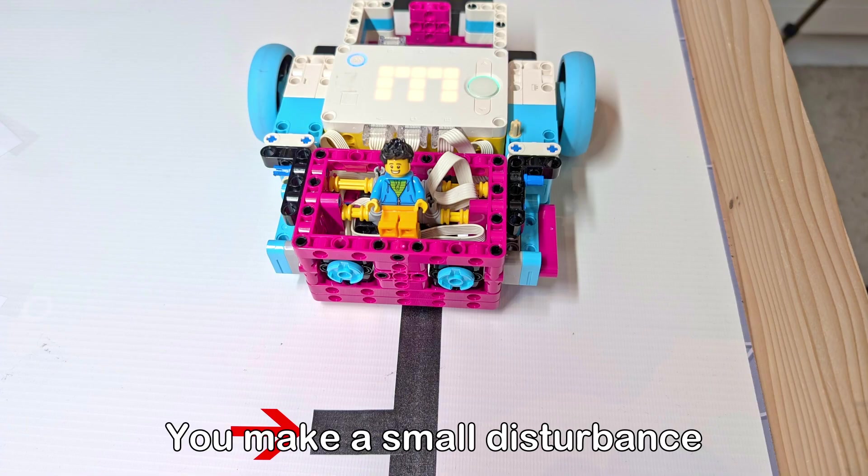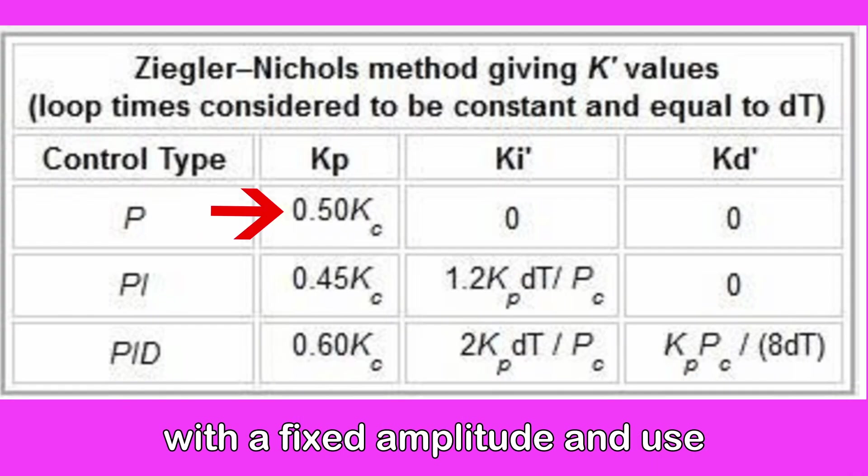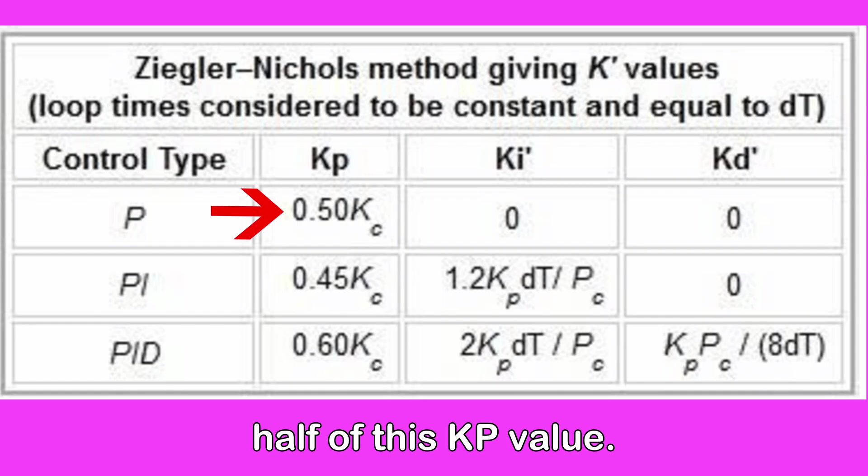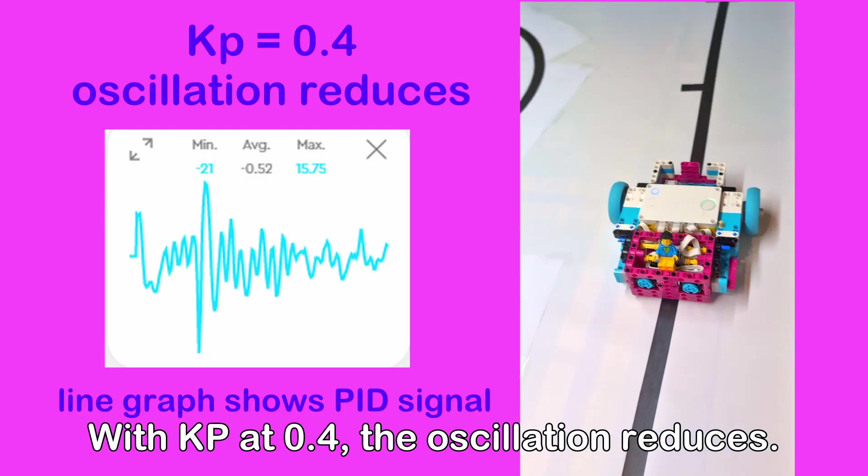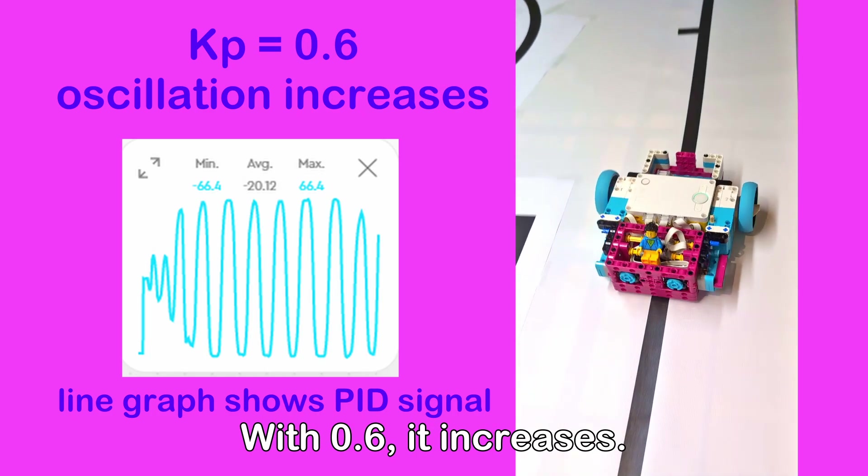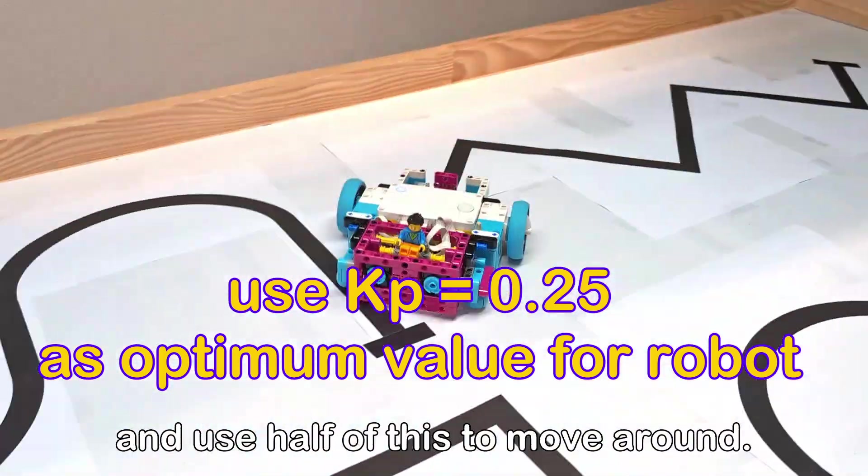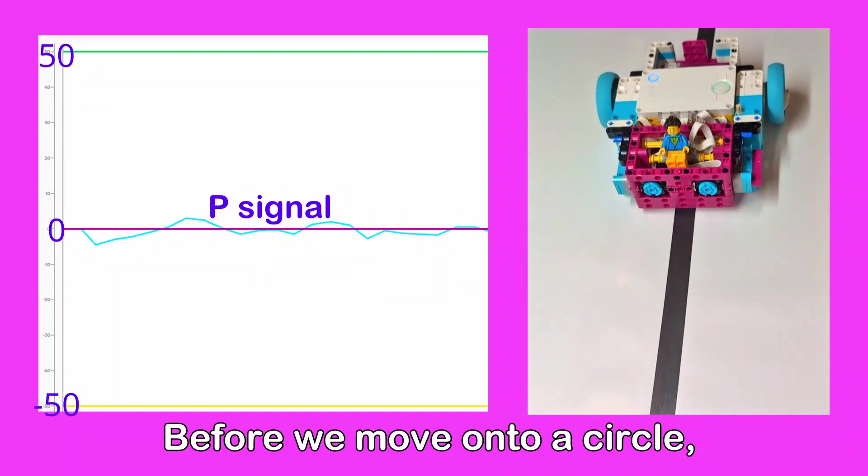You make a small disturbance and see how the robot reacts. Adjust KP till the robot oscillates with a fixed amplitude and use half of this KP value. With KP at 0.4, the oscillation reduces. With 0.6, it increases. So we take 0.5 as the critical value and use half of this to move around.